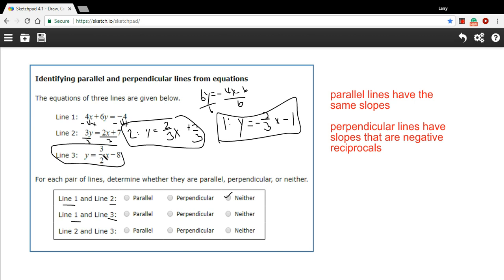They are perpendicular. If you take 3 halves, you flip it upside down, you'd get 2 thirds, and then you change the sign to make it a negative 2 thirds. You end up with what we have here in number 1. So these are perpendicular.